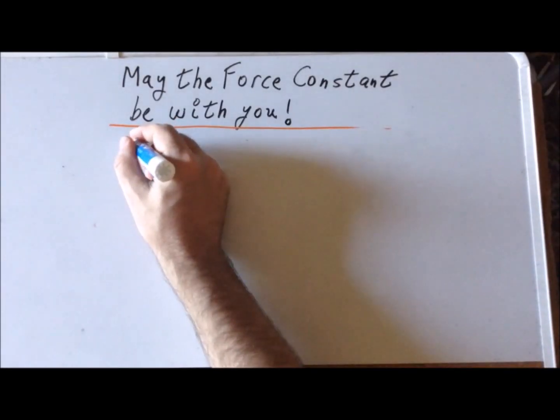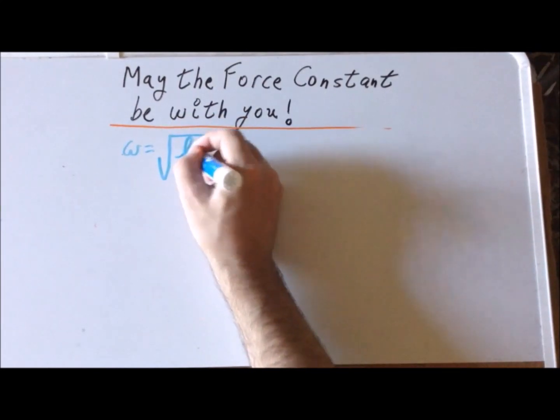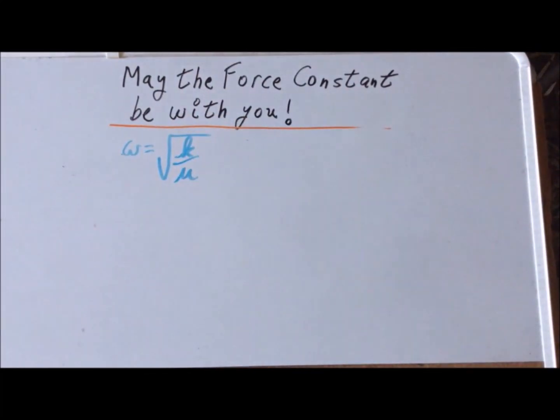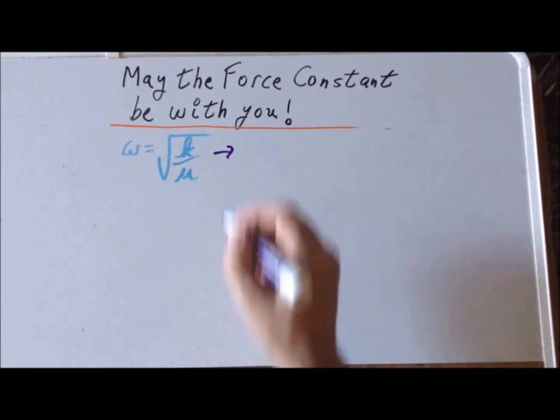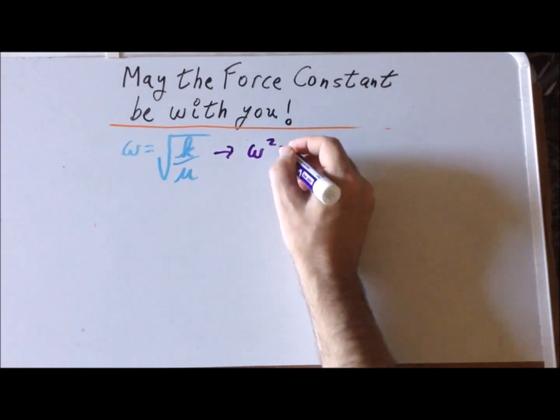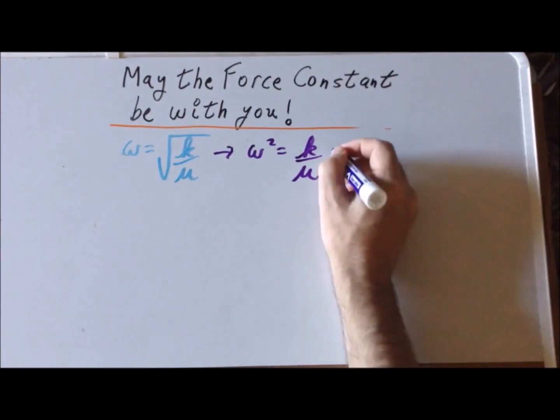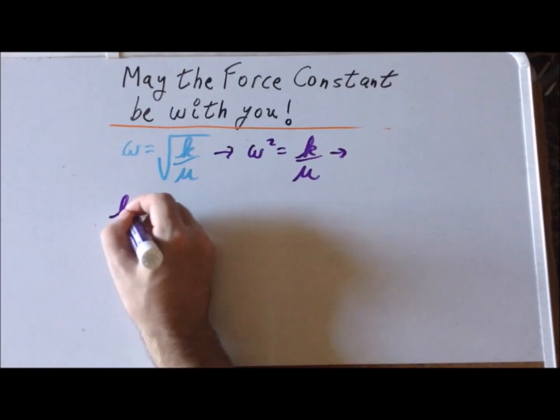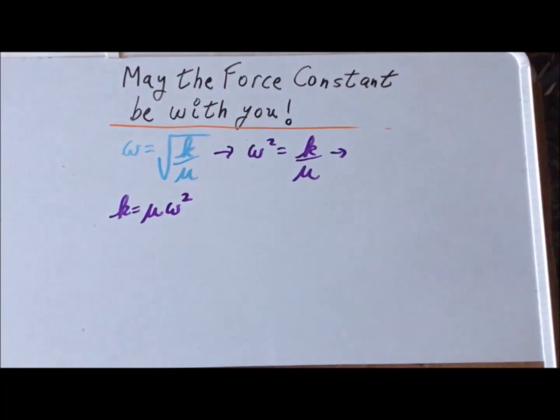The angular frequency omega is related to the force constant as the square root of k divided by μ. Squaring both sides gives omega squared equals k divided by μ. One more manipulation gives us that k equals μ times omega squared. Now we can finish the calculation in essentially one go.